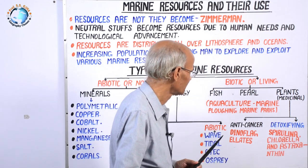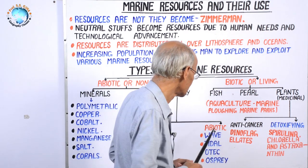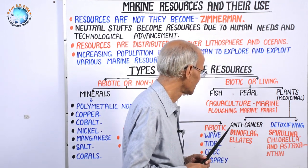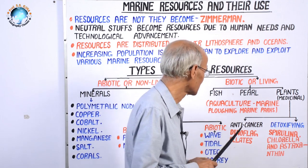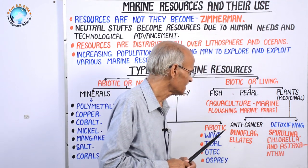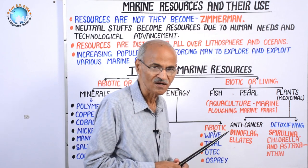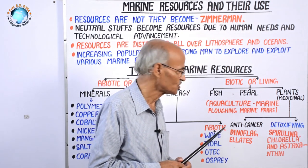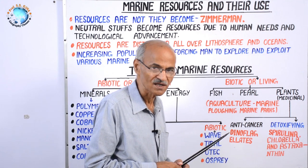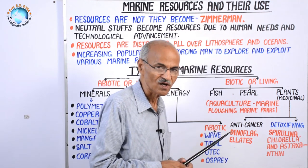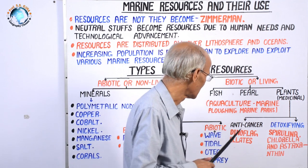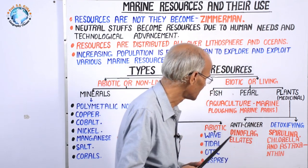A very important human activity in the ocean is aquaculture, which is generally practiced in shallow waters along the coast where fishing is also practiced. There is also marine plowing — man is now plowing the shallow waters along the coast. In marine plowing, fish, their breeds, herbs, phytoplankton, and small microorganisms are being nourished in the ocean. This is called marine plowing.